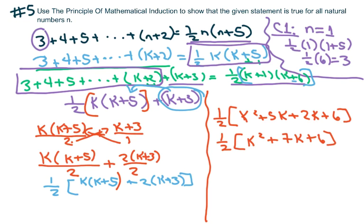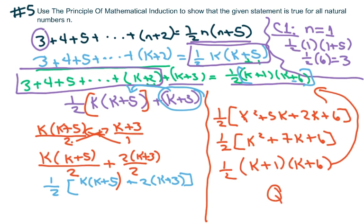When we factor this, we're going to get k plus 1 and k plus 6, and it does match our right side of the equation. We have proved condition 1 and condition 2, and the statement is true for all natural numbers n. Thank you, have a nice day, bye bye.